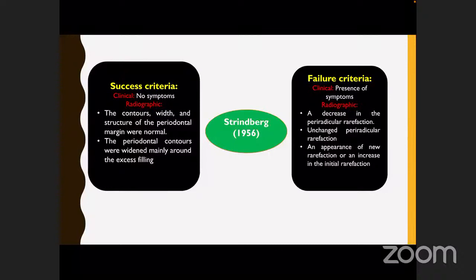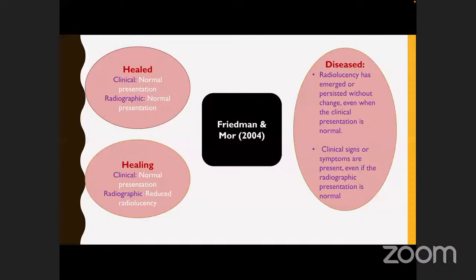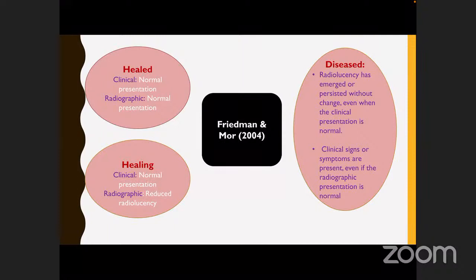Friedman and Moore in 2004 gave three classifications: healed, healing, and disease. Healed is when the patient is clinically normal and radiographically there is reduced radiolucency. Disease is when radiolucency has emerged or persisted without change even with normal clinical presentation, or when clinical signs or symptoms are present even if radiographic presentation is normal — either condition constitutes disease according to Friedman and Moore.